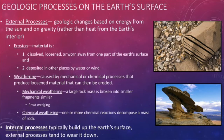Once the material has been weathered, it is then moved in the process of erosion. This involves the actual picking up of material and then deposition of it downstream or downwind. Water and wind are the two biggest erosional agents on earth. As a result, internal processes build up and external processes break down the earth's surface.